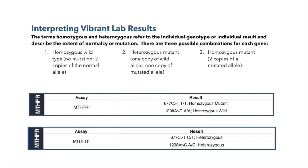Looking at lab results, here are two examples. In the first example, the patient is homozygous mutant for the 677 gene, which means he has two copies of the T. He is also homozygous wild for 1298, which means he has two copies of the A. So this patient has two copies of the mutated allele for 677 and no copies of the mutated allele for 1298.